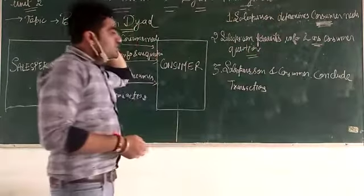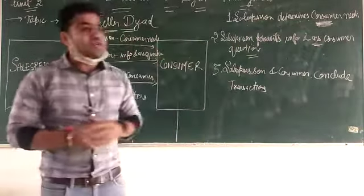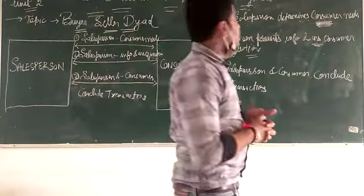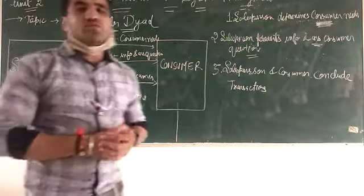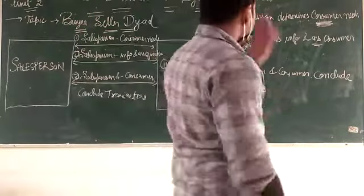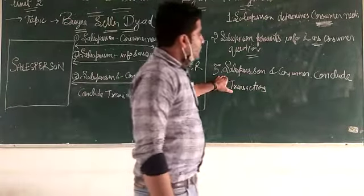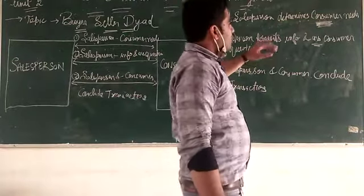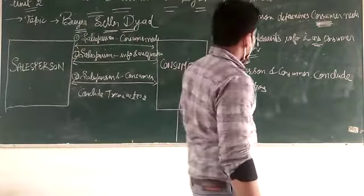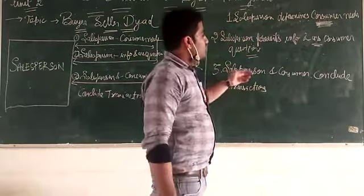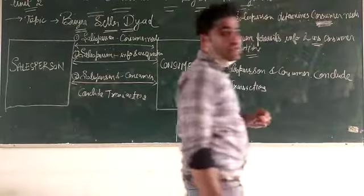And the third one is salesperson and consumer conclude transaction. After giving the information about the product and services and answering the consumer questions, the consumer doubts are clear and the salesperson and consumer conclude the transaction, ending the sale.